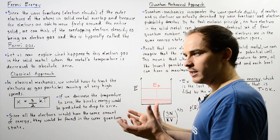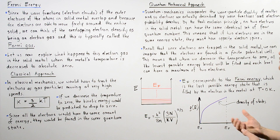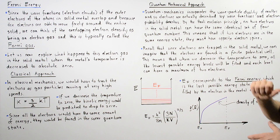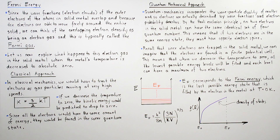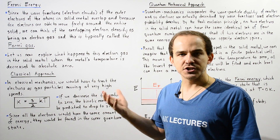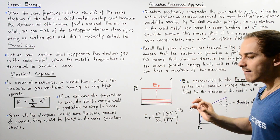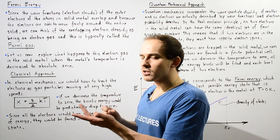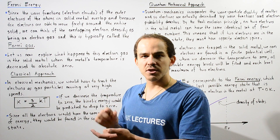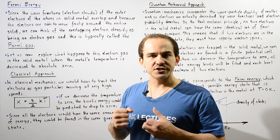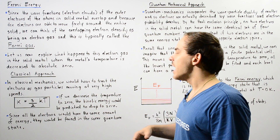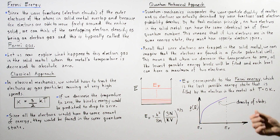By the Pauli exclusion principle, no two electrons in any solid metal can have the same identical set of quantum numbers. This means that if two electrons are in the same exact energy state, they must have opposite electron spins. So if two electrons have the same principal quantum number, orbital quantum number, and magnetic quantum number, they must have two different electron spins — one with positive one-half and the other with negative one-half.